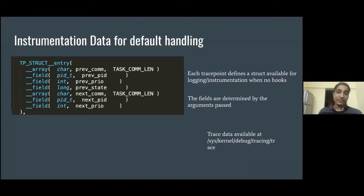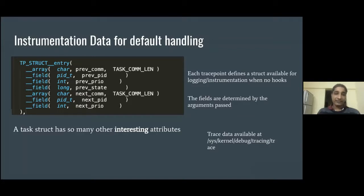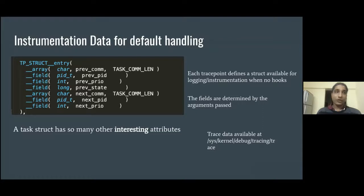The fields written here obviously depend on what arguments are passed to the trace point. We notice there are only seven fields here. A task struct can have a lot of fields and we are definitely not logging all those attributes. There's a reason: the trace buffer is a ring buffer, which is limited in memory capacity, so we cannot log all attributes of a task. But if we want to log a few attributes which might be interesting to us, we can use raw BPF trace points.